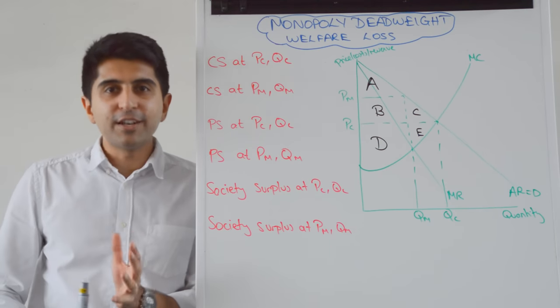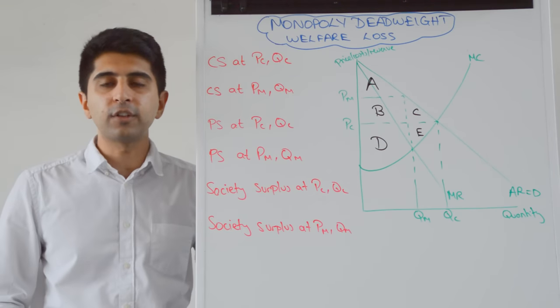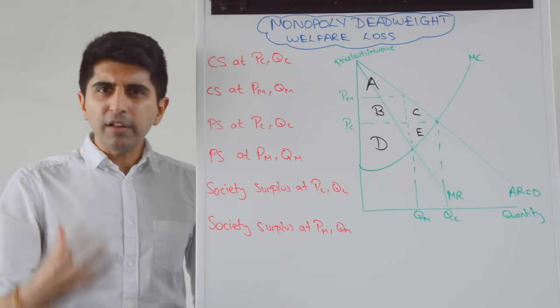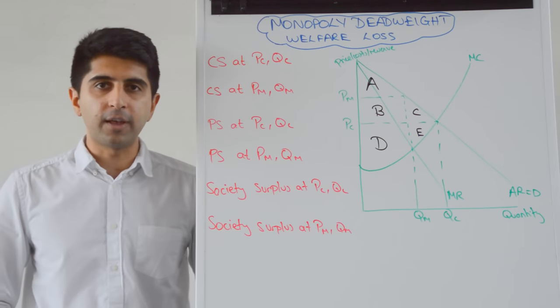Hi everybody! Something else that you need to know in your course is why monopolies cause a deadweight welfare loss. Remember the word deadweight means not recovered and by welfare we mean society's surplus, the sum of consumer and producer surplus.